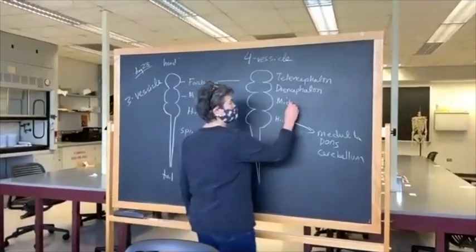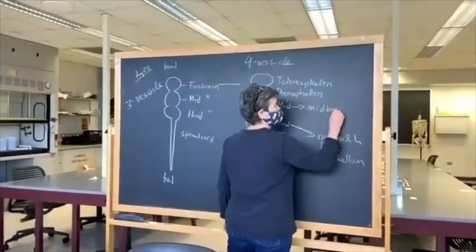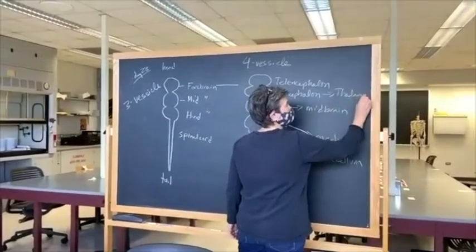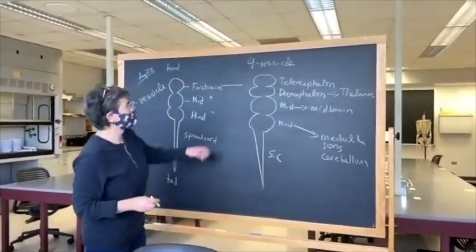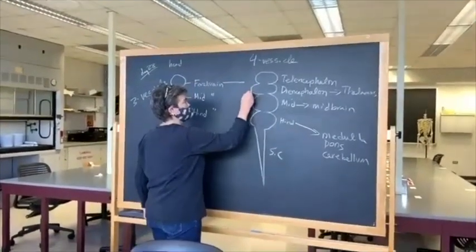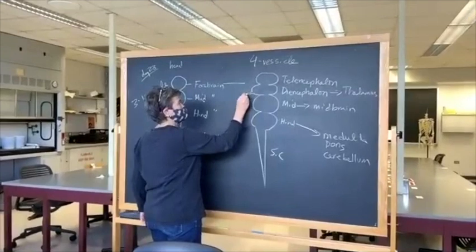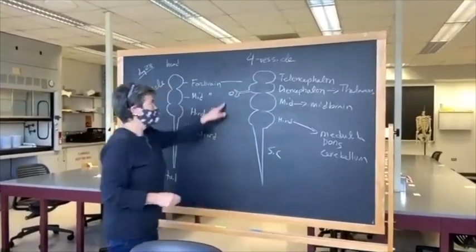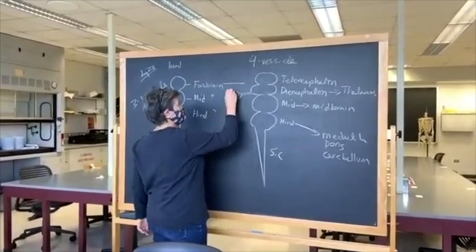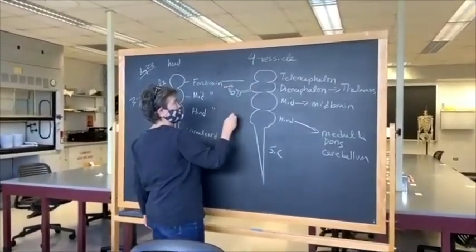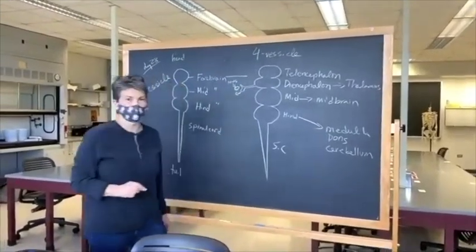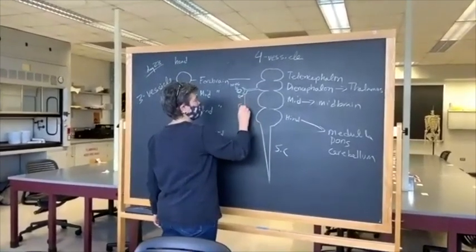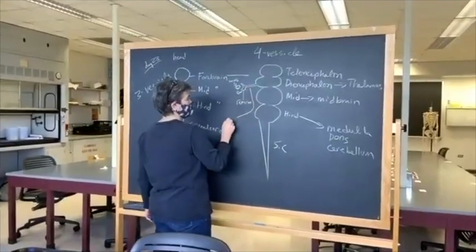The diencephalon is going to become the thalamus, plus one other important thing. From the diencephalon there's an outpouching that grows and grows, and it interacts with a placode that makes the lens of the eye. This outpouching is going to become the retina, and this stalk is going to become the optic nerve.